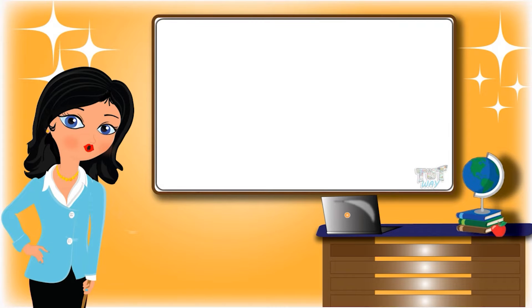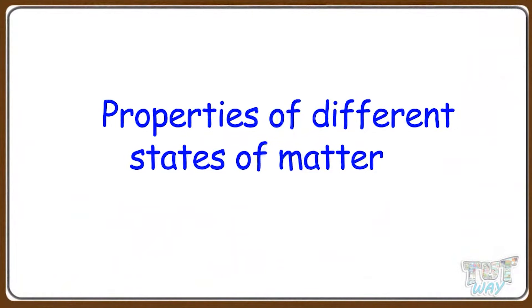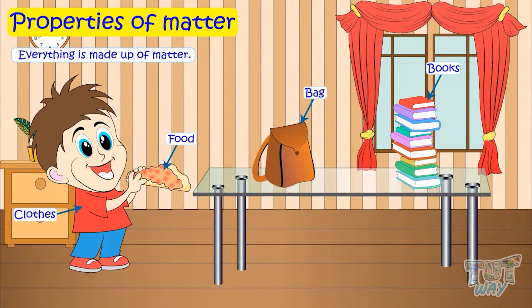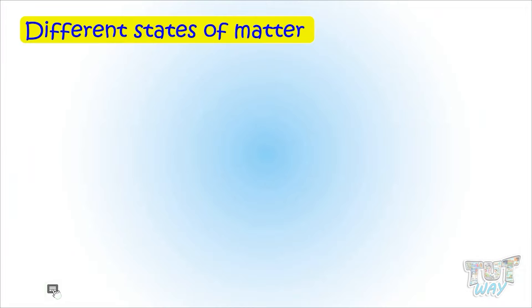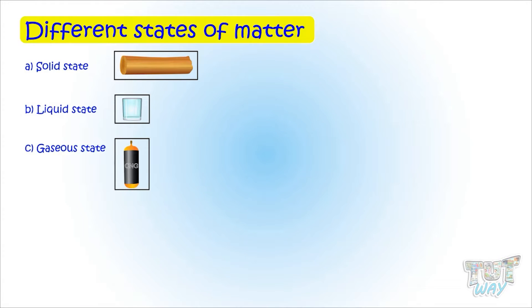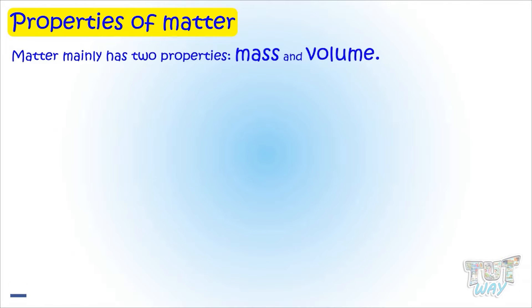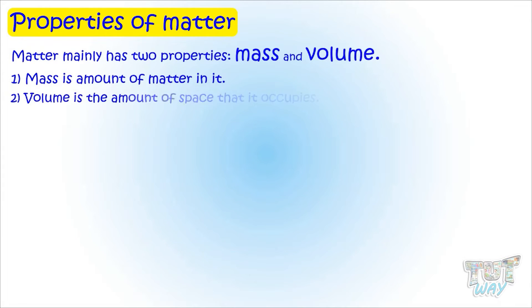Hi kids, today we will learn about properties of different states of matter. Everything around us is made up of one or the other form of matter. Different forms of matter are solid, liquid, and gaseous form. Matter mainly has two properties: mass and volume. Mass is the amount of matter in it, and volume is the amount of space that it occupies. Now let's learn about the properties of different forms of matter.